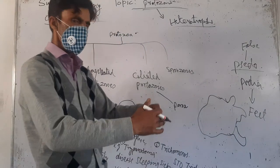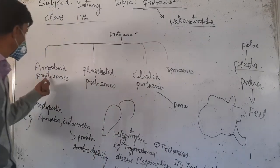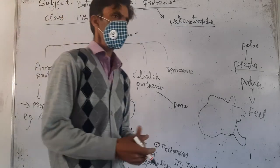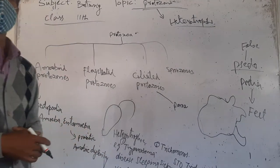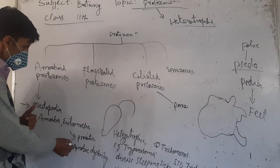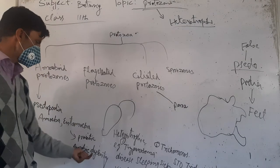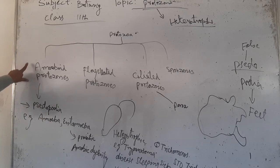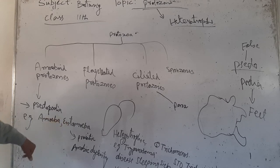Pseudopodia help the amoeba to move in water — the movement in water. This is why we call it amoeba. The amoeba is Entamoeba. If we take a disease, we call it amoeba. These are amoeboid protozoans; they contain pseudopodia, which helps them to move from one place to another. For example, Amoeba and Entamoeba.